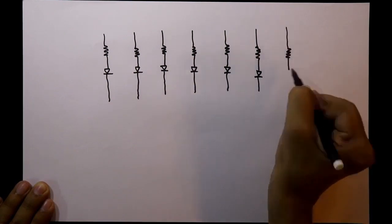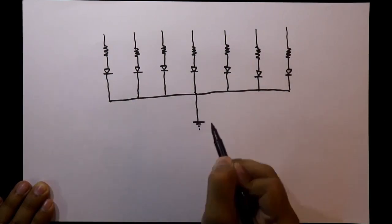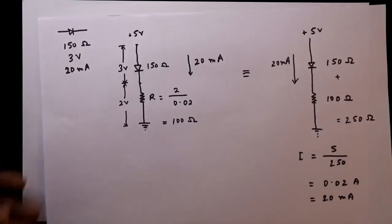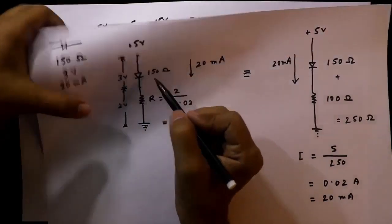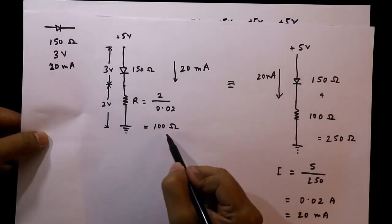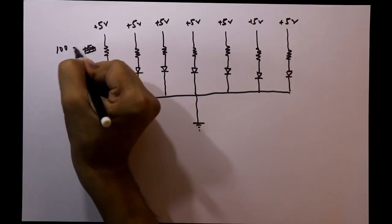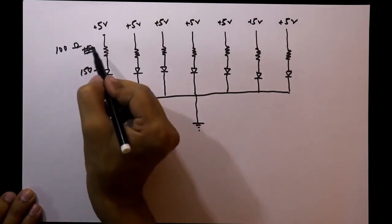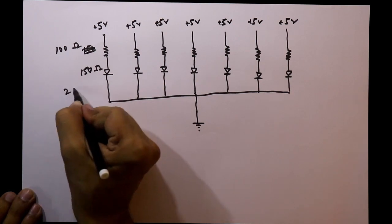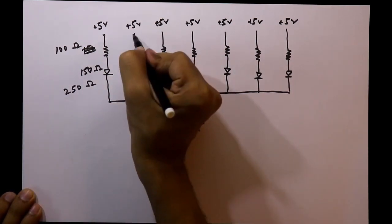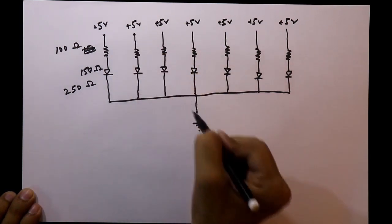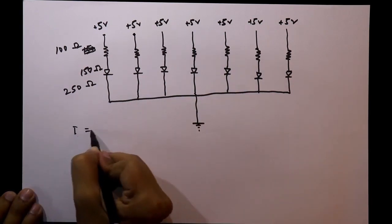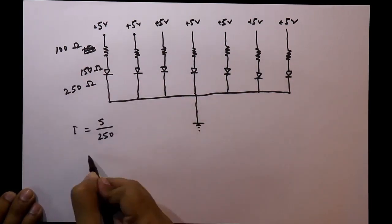Now analyze the correct circuit. The common cathode side is directly connected to ground, and each signal input is at plus 5 volts. As already calculated, the internal resistance is 150 ohms and the external resistor per segment is 100 ohms, giving a total resistance from signal to ground of 100 + 150 = 250 ohms per input. Each signal therefore carries 20 milliamperes.